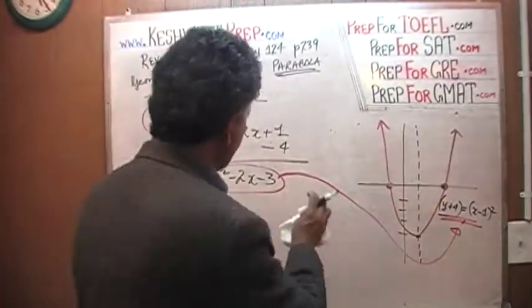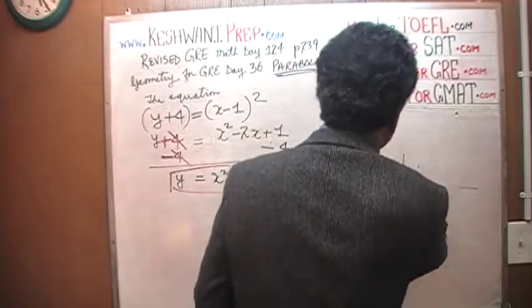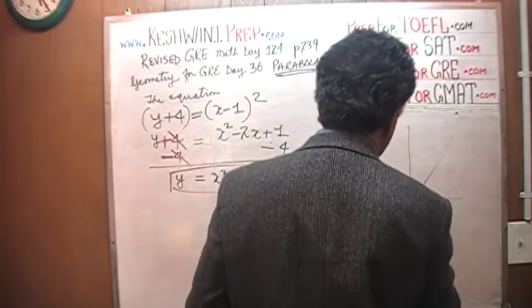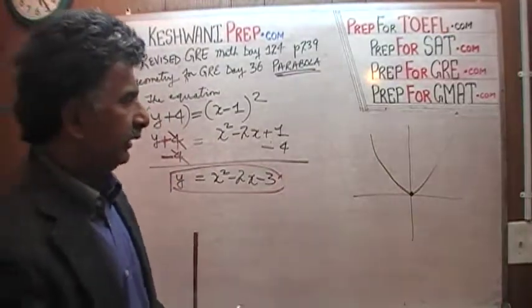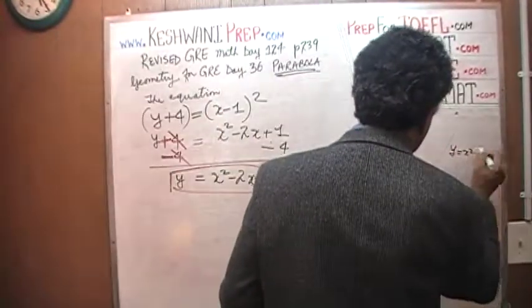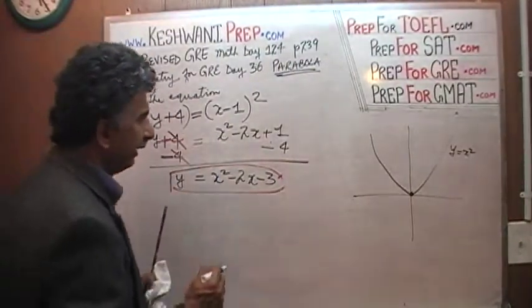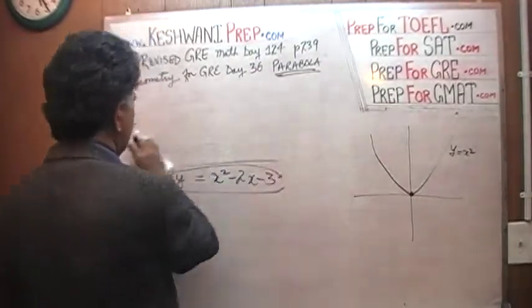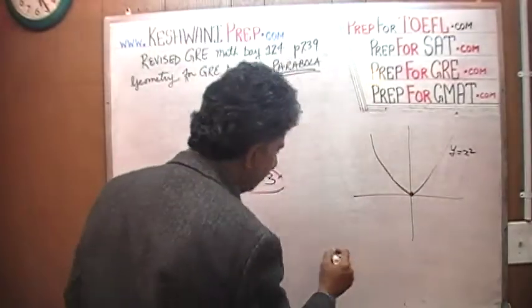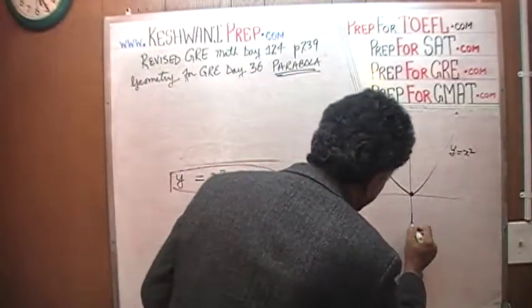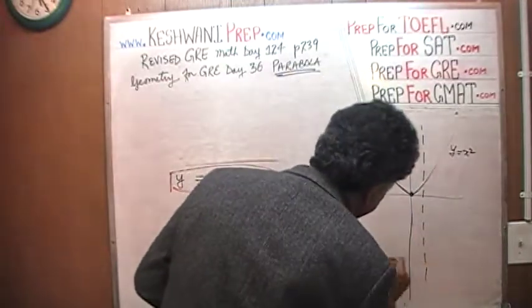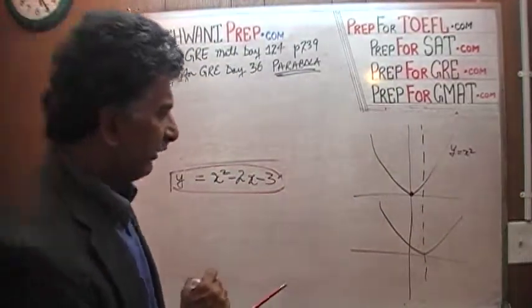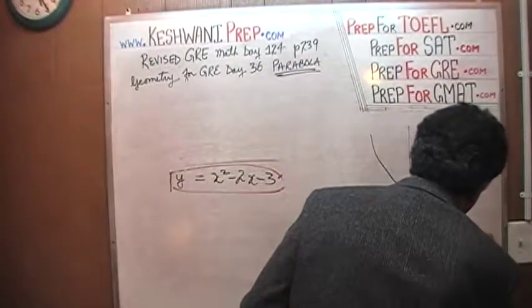We started out our story with a very simple, straightforward parabola sitting right at the origin. The equation of this was y equals to x squared. What we did next was we lifted it up, picked it up, and shifted it to the right one unit. As a result, the new equation was y equals to x minus one, whole squared.